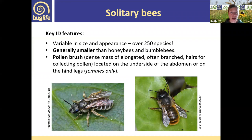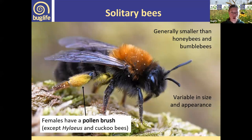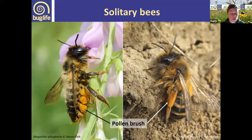Solitary bees are very variable in size and appearance — generally smaller than honeybees and bumblebees. They don't have a pollen basket; instead they have a pollen brush, which is just a dense mass of branched hairs that collect pollen, located either on the underside of the abdomen or on the hind legs. Again, only the females collect pollen. You can clearly see the pollen brush with lots of pollen collected in the hairs, and it's very obvious when there's lots of pollen on there.